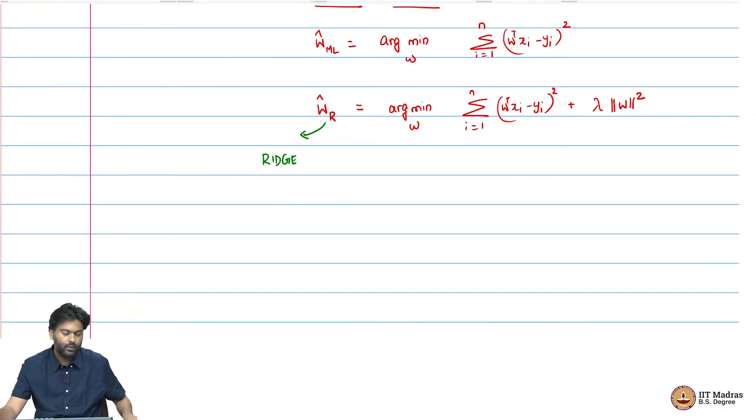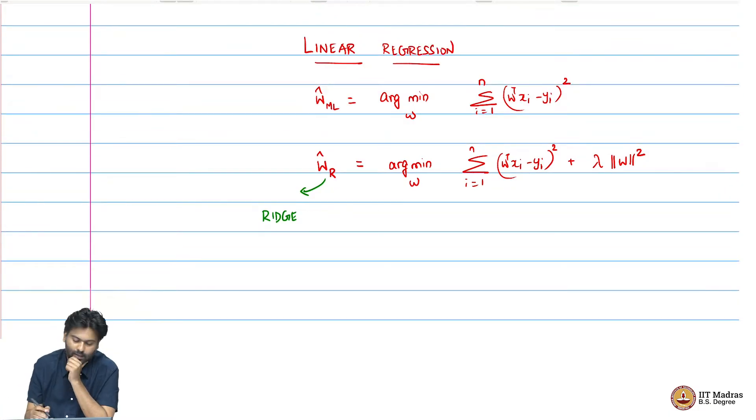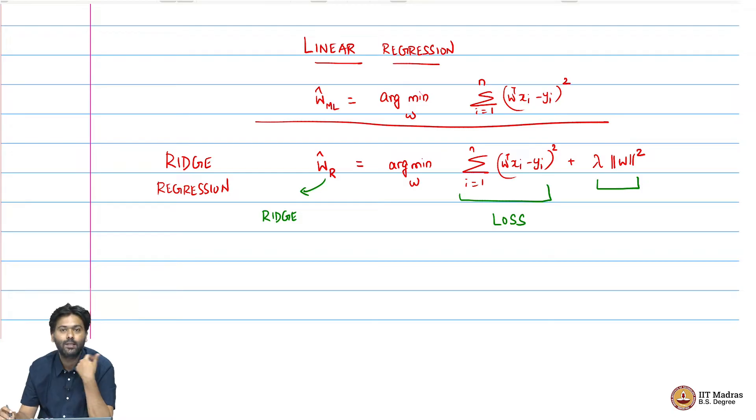This problem is called the ridge regression problem, where you add this extra term to your original loss. This extra term has a Bayesian viewpoint, or you can think of it as adding this term to minimize your mean squared error.